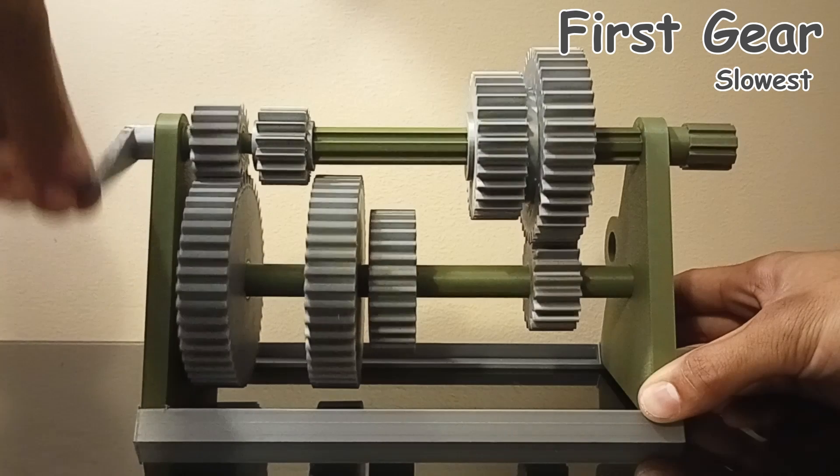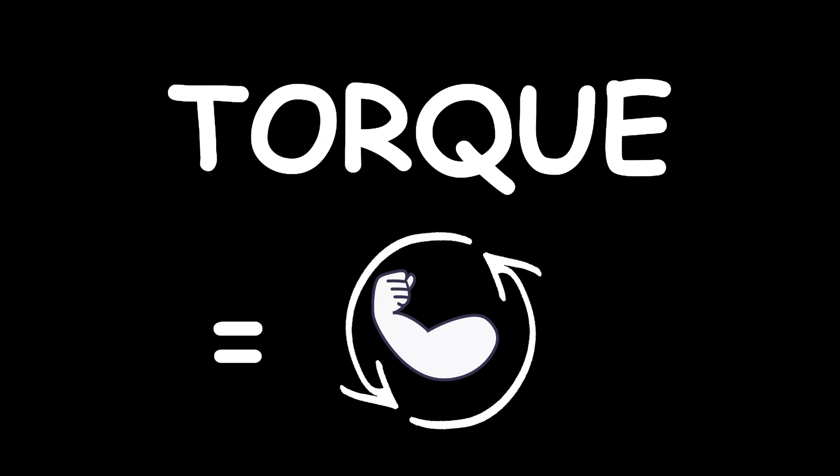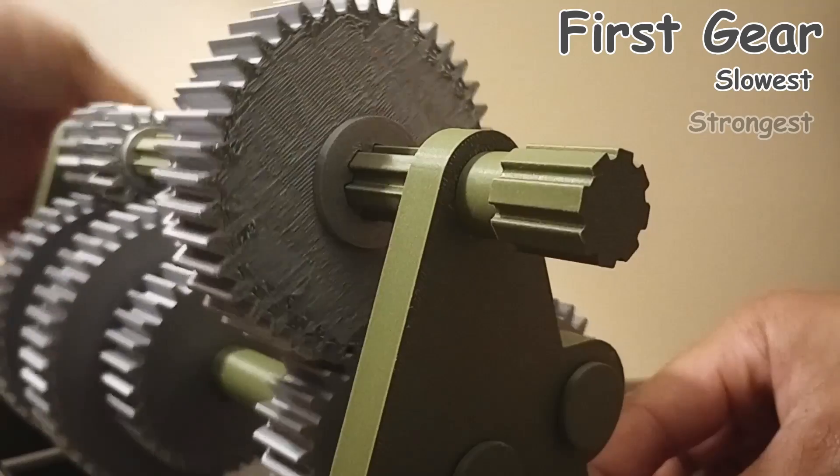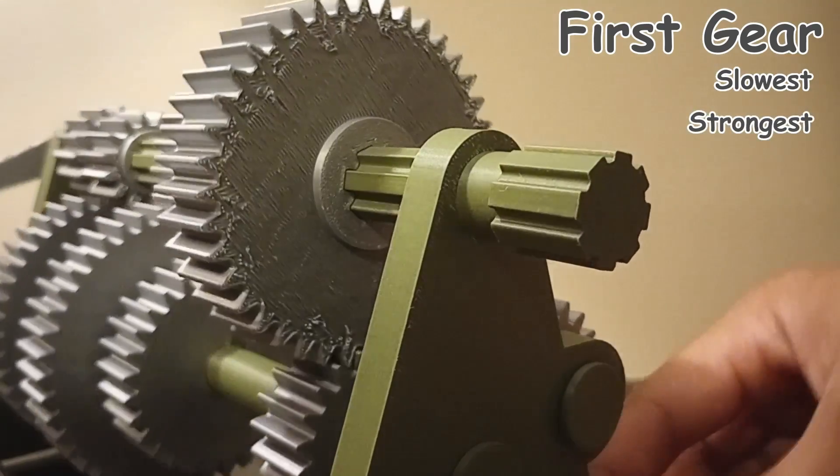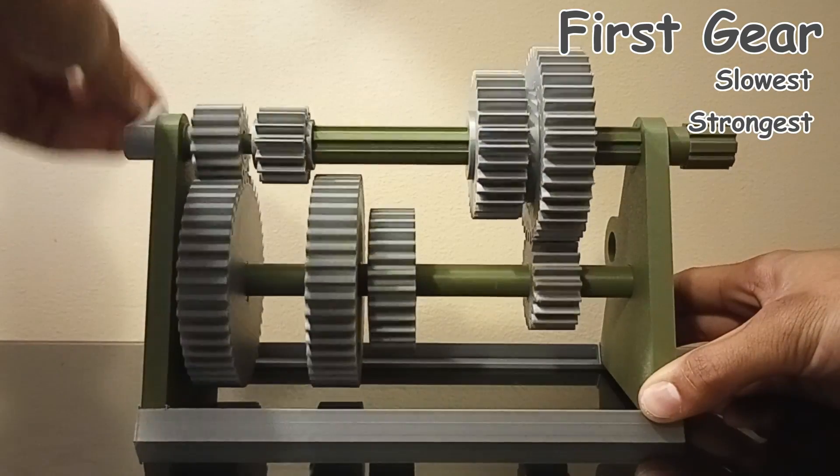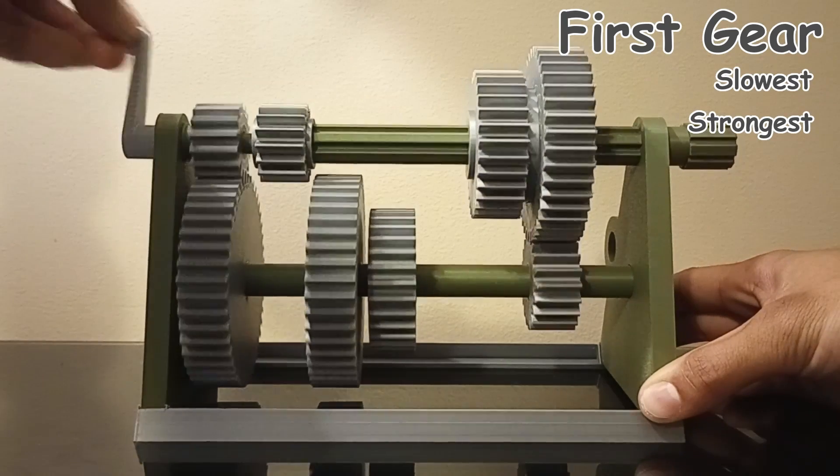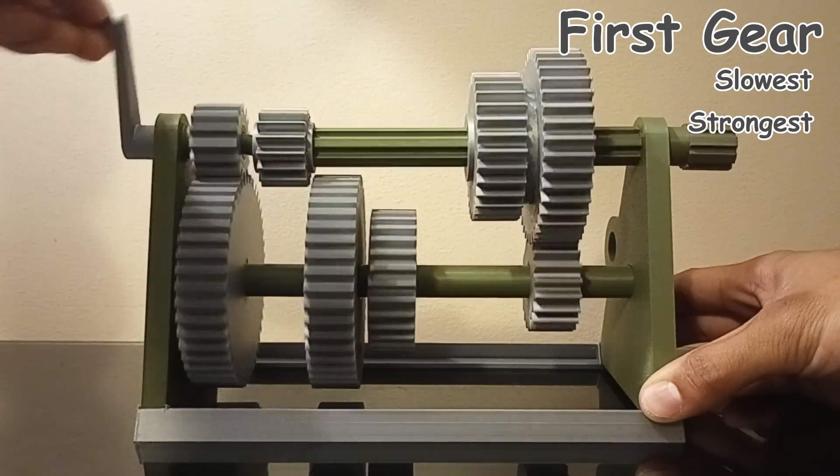However, there is a trade-off for that speed, that being torque. Torque can be explained briefly as rotational force. And although this first gear is the slowest setting, it also is the strongest. But why would a gearbox need a high amount of strength? Well, you'd probably need it if moving a car from rest since it's literally a huge chunk of metal that weighs more than 3,000 pounds.